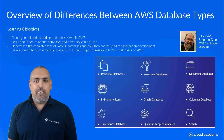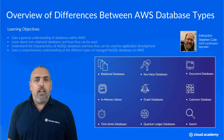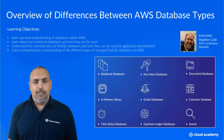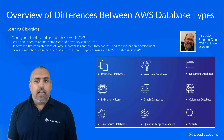We have three new courses relating to databases that I want to mention. The first is an overview of differences between AWS database types, providing a high-level overview of the managed database offerings available from AWS. It covers relational and non-relational databases, how they work, their strengths, and what workloads are best suited for them. It also includes an overview of NoSQL and why it's important to application development. This course is ideally suited for people relatively new to these database types.